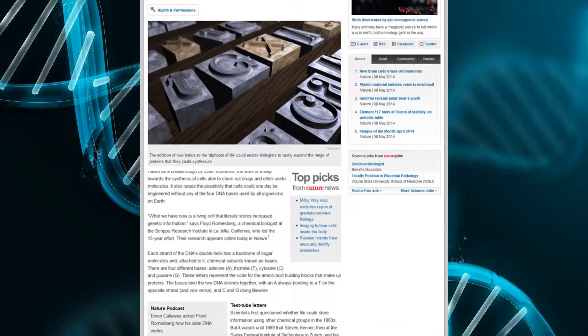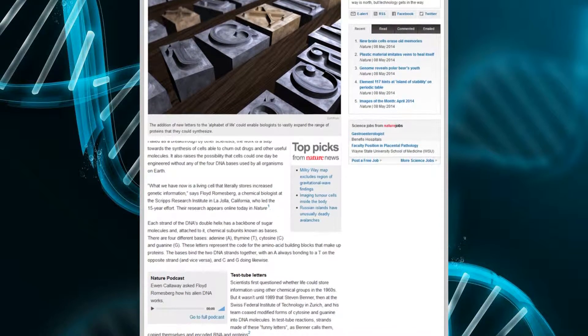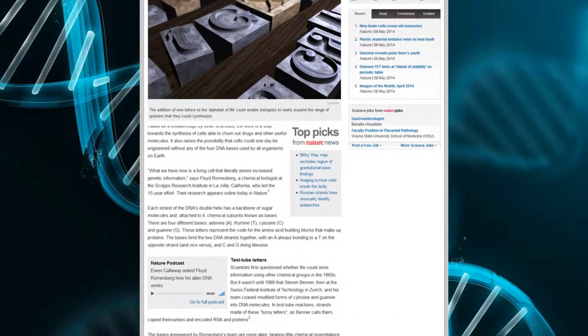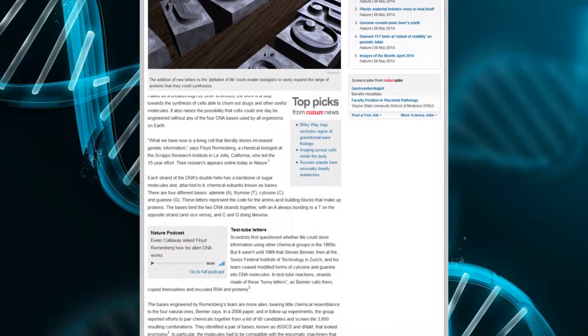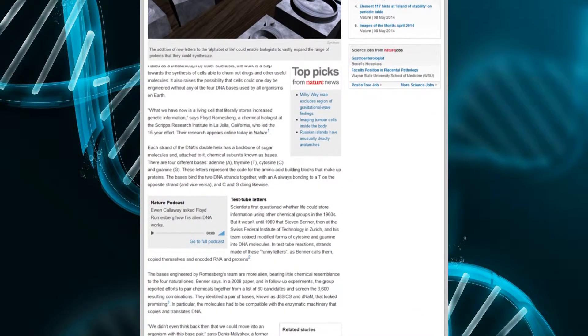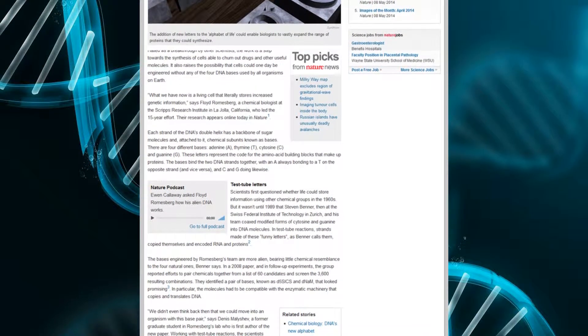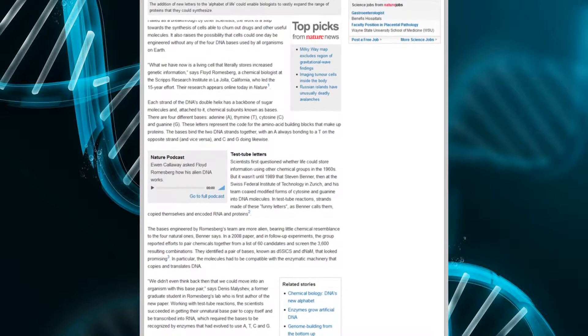But now, a team at the Scripps Research Institute in California have engineered E. coli bacteria to build its DNA with two additional letters, so far rather unhelpfully called X and Y. Nature reporter Ewan Calloway spoke to Floyd Romsberg and asked how he and his team bucked billions of years of evolution by adding to DNA's alphabet.